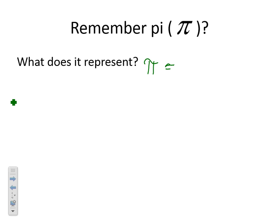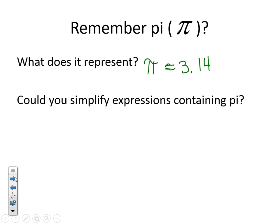If I wanted, I could go through and simplify these expressions containing pi. Here's the first one. In order to do this, I'm going to put my 2 to both of these so I get 5 squared times pi squared. And I know 5 squared is 25, so I'd have 25 pi squared if I wanted to simplify this one.